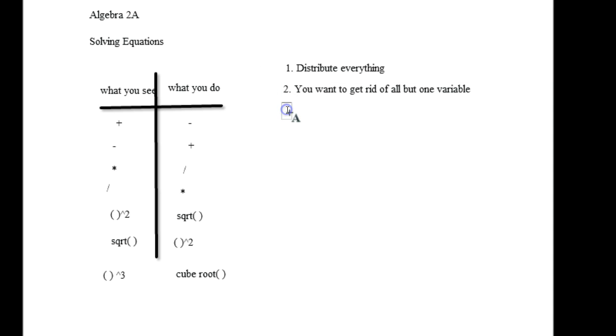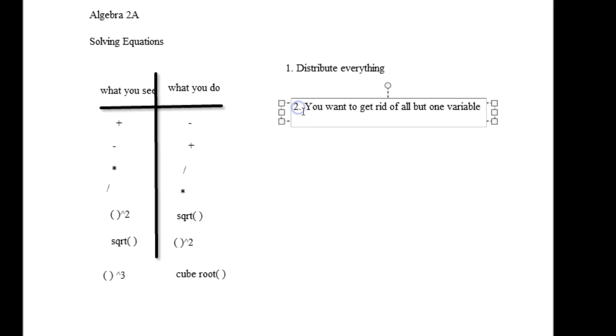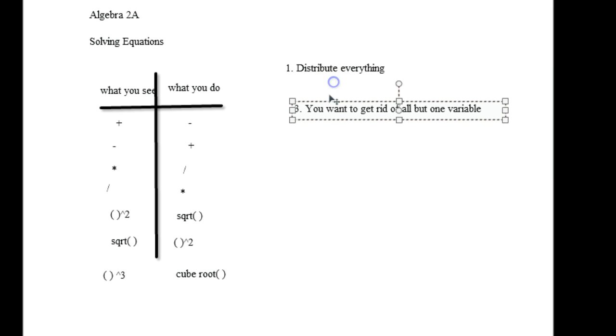Step number two is you want to get rid of all but one variable. No, sorry, that was step number three. Let's erase that, move this one down, change that to step number three. And I'll explain why these come in a certain order. You'll see why in a sec. Step number two.